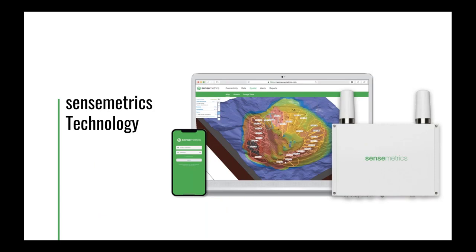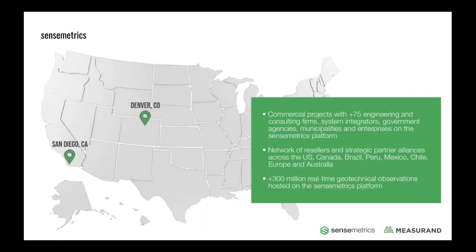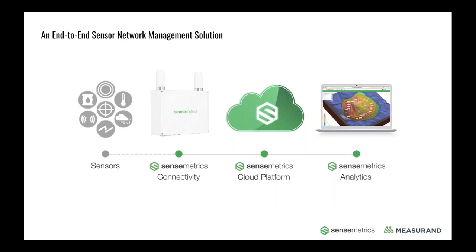SenseMetrics has two offices in the United States — San Diego and Denver, Colorado. We have active projects with over 75 engineering and consulting firms, system integrators, government agencies, municipalities, and large enterprises. We've established a network of resellers across the Americas — Canada, Mexico, Brazil, Chile, Peru — as well as in Europe and Australasia. Today we are hosting over 300 million real-time geotechnical observations on our platform.